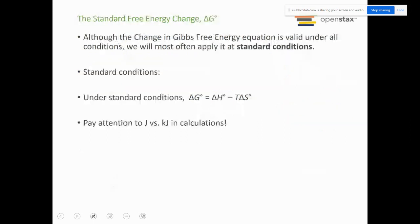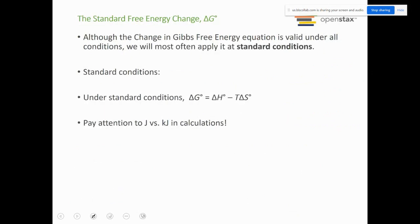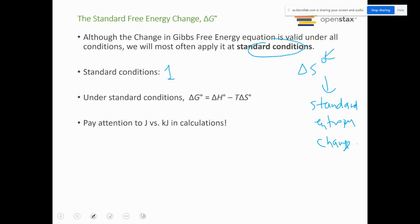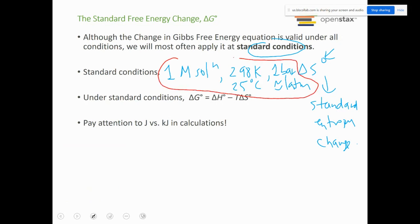Similar to how we have standard entropy delta S degree, we have the same concept with delta G degree — standard free energy change. The degree sign tells you that you are at standard conditions. Standard conditions: one molar solution, room temperature is 298 Kelvin or 25 degrees Celsius, and pressure is one bar, which is very close to one ATM. Make sure you know these conditions — I can definitely ask about them in the exam. Under standard conditions, the formula delta G equals delta H minus T delta S would have a degree sign for all those thermodynamic functions.